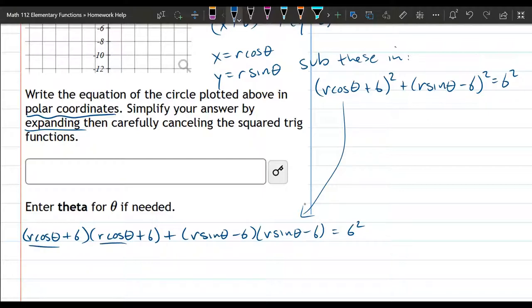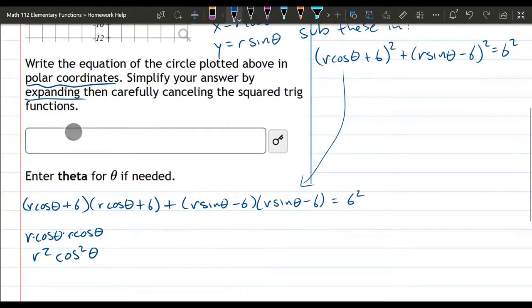Okay, so we're going to FOIL here. So we have first, first, multiply those two together, you're going to have r cos theta, r cos theta, and these are all multiplied here, so it's really r squared, cos squared theta. So that's the first multiplied together.